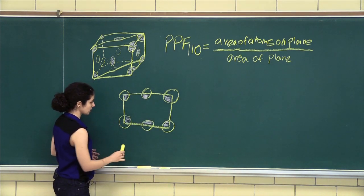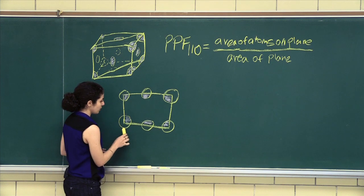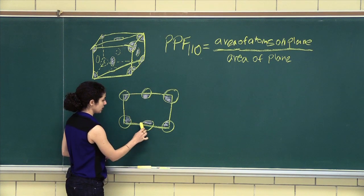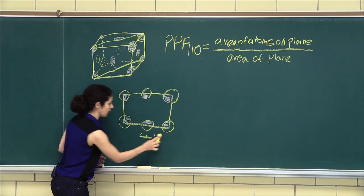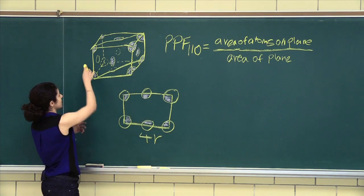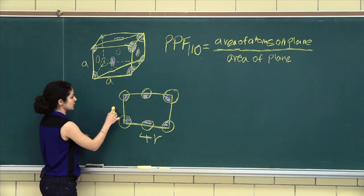And we also know that at the bottom, it's 1, 2, 3, 4r, but at the side, it's just a.